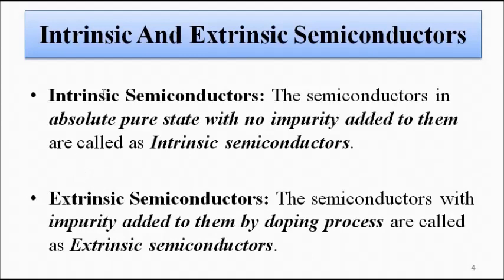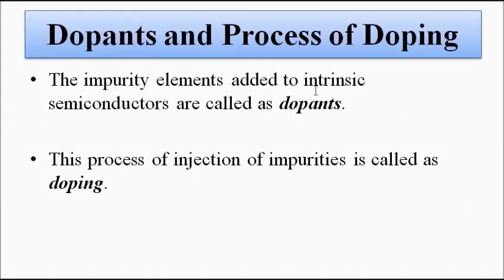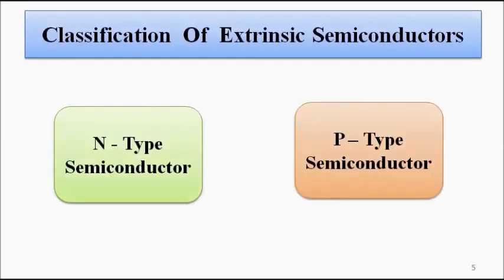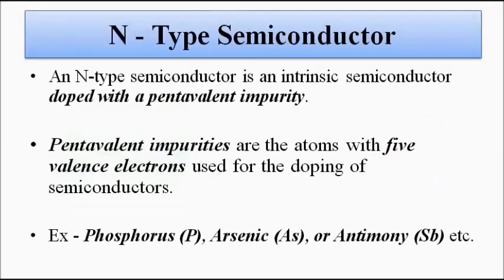These foreign impurity elements added to a pure intrinsic semiconductor are called dopants, and the process of injecting this impurity is called doping. Now, let's discuss the fabrication of N-type semiconductors.